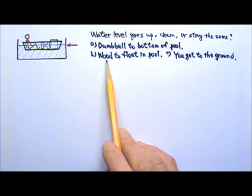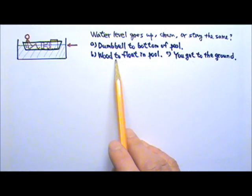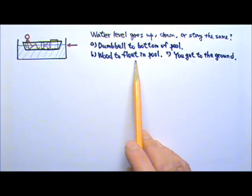B. You pick up the block of wood instead of the dumbbell, drop it into the pool, and the block of wood floats in the pool.